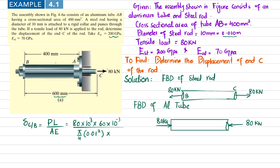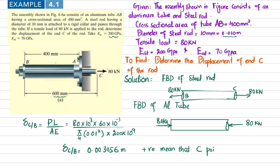E for steel is 200 gigapascals, so 200 × 10⁹ pascals. Solving this gives the displacement of point C with respect to point B as 0.003056 meters. The positive sign indicates that point C moves toward the right.